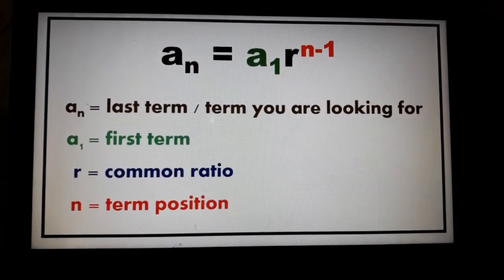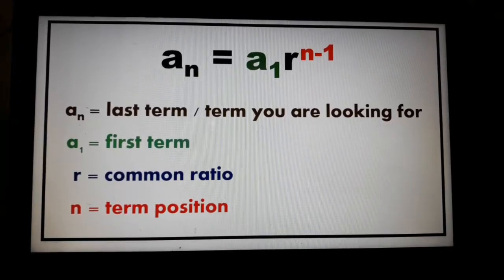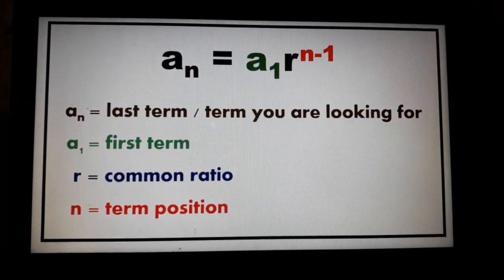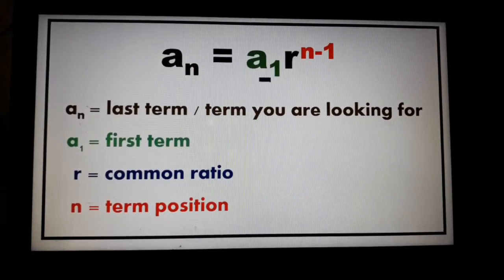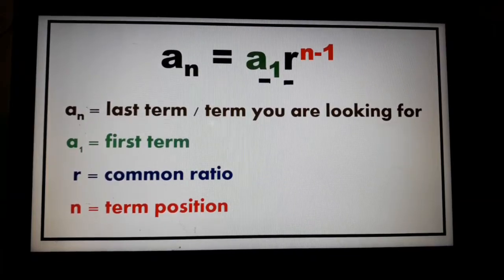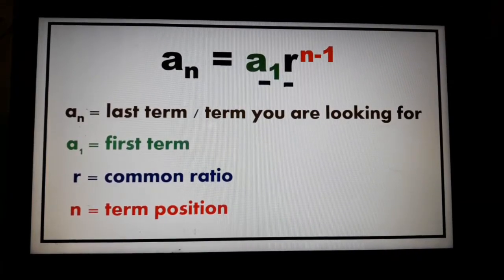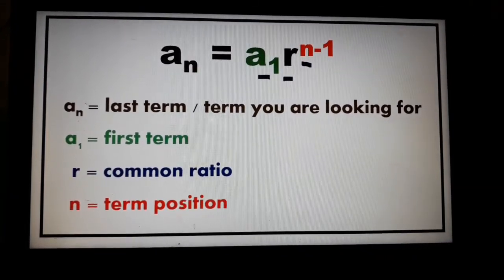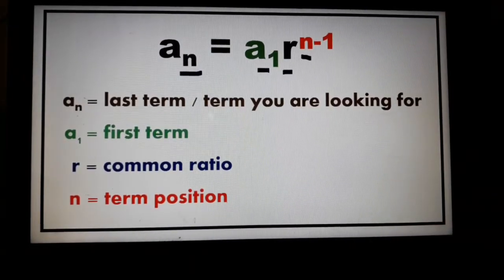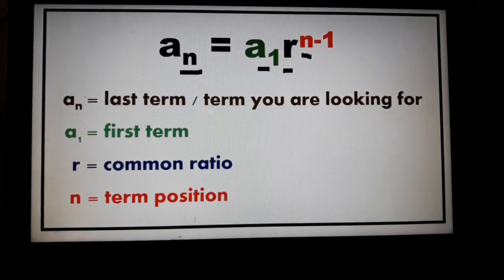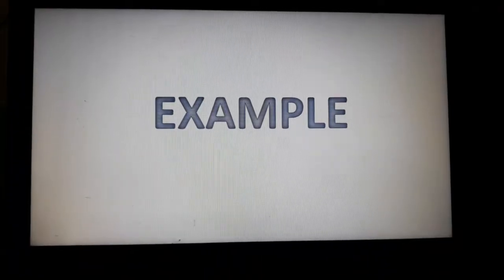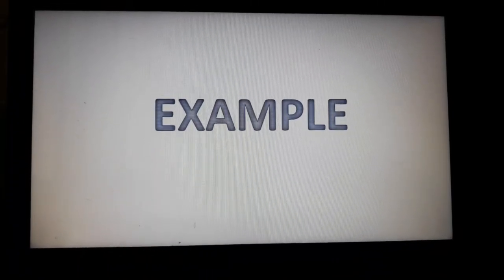Remember that a sub n is your last term, or the term you're looking for. A sub 1 is the first term. R is your common ratio, and n is the term position.